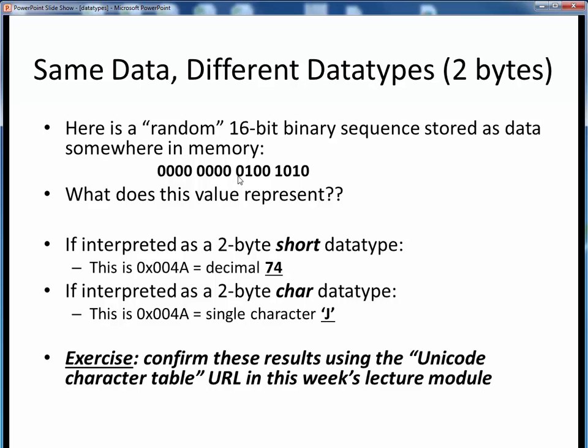But, if this is being stored using a 2-byte char data type instead, this data now represents the single Unicode character for a capital J. Incidentally, this also ought to illustrate how, internally, even characters are represented by their equivalent numeric Unicode values. As an exercise, see if you can confirm this result using the URL to a Unicode table, which is given in this week's lecture module materials.